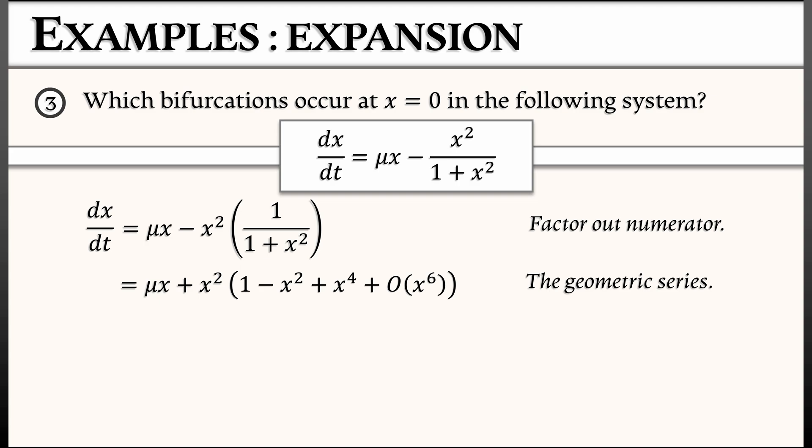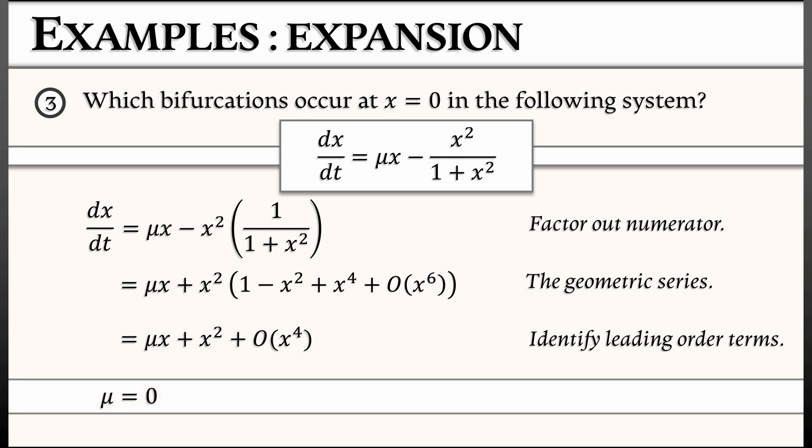Grouping terms together by lowest order, what I get is mu times x plus x squared. And all the remaining terms are of order x to the fourth and higher. I'm going to throw those away. We have, again, a transcritical bifurcation at mu equals zero.